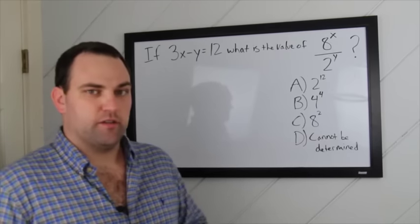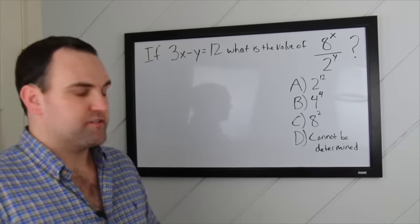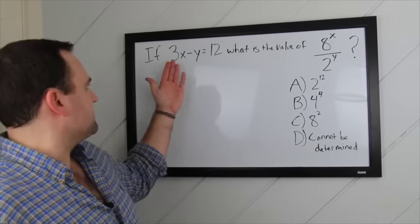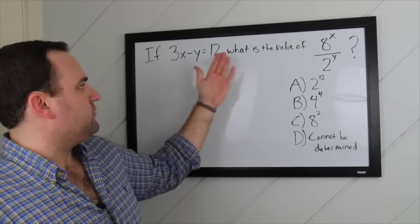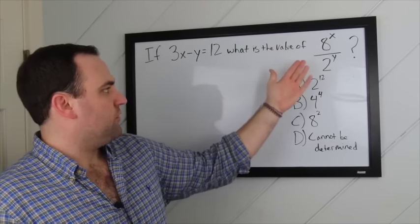So, here's another example from the new SAT math no calculator section. It says, what if 3x minus y equals 12, what is the value of 8 to the x over 2 to the y?